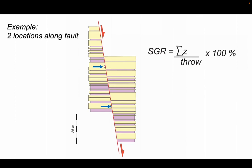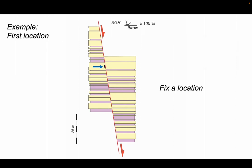We'll look at two locations along this particular faulted sandstone-shale succession and go through the workflow. The first part is to fix a location on the fault, which we've done here. It's our first location. Then we measure the throw.